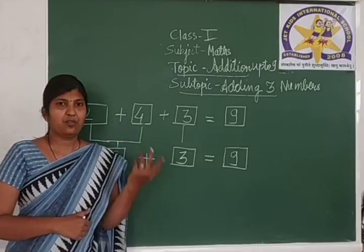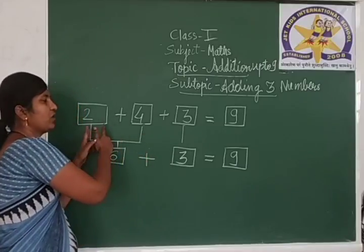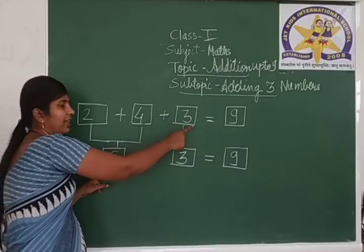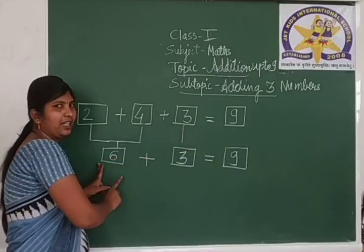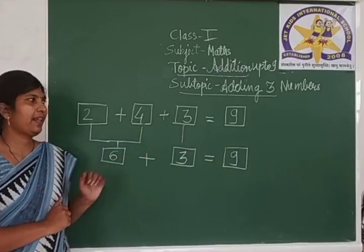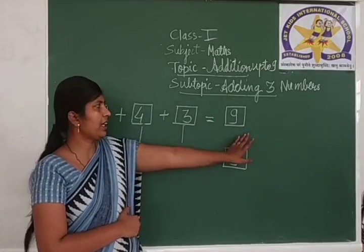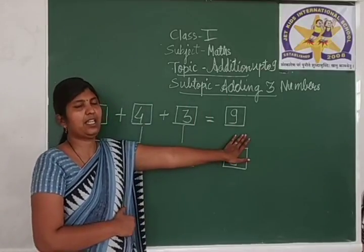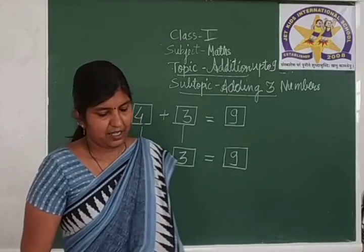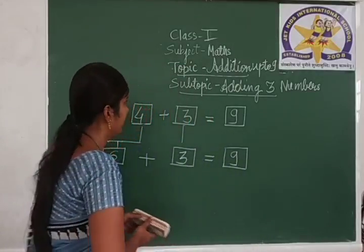While adding 3 numbers, what we did? We added the first 2 digits and then added the next digit to the obtained answer, and then we got our answer. The sum of these 3 numbers is 9. Now we will see another example also.